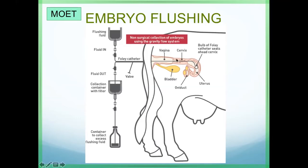The Foley catheter has a balloon on it. We place the catheter and inflate the balloon to block the uterus. By flushing medium through, we can pass the embryos out and collect them.